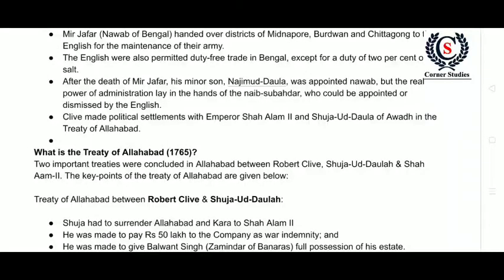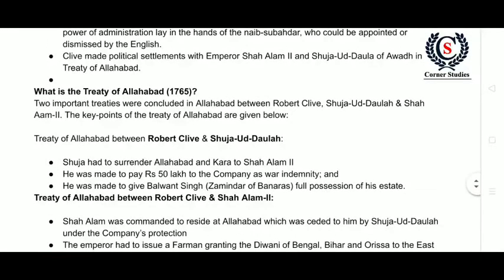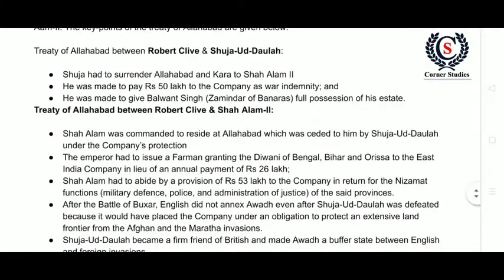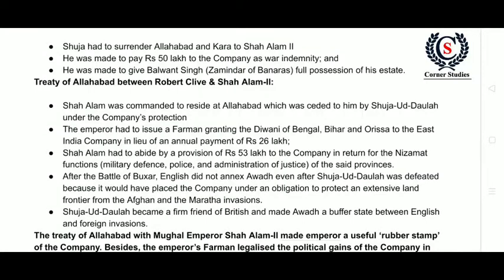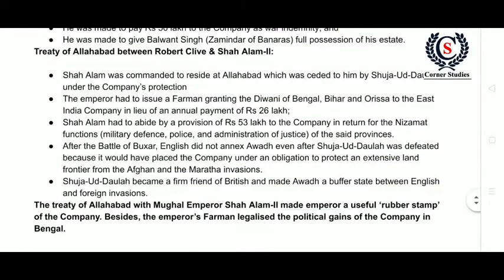The Battle of Baksar ended with the Treaty of Alhabar. The Treaty of Alhabar was between Robert Clive and Sujavdala, and between Robert Clive and Shalem the Second. Sujavdala had to pay 50 lakh to the company as war indemnity, and Shalem the Second had to pay 26 lakhs. The Treaty of Alhabar with Mughal Emperor Shalem made the Emperor a useful rubber stamp of the company. In 1765, the Mughal Emperor gave the company the Diwani rights, and this was the end.